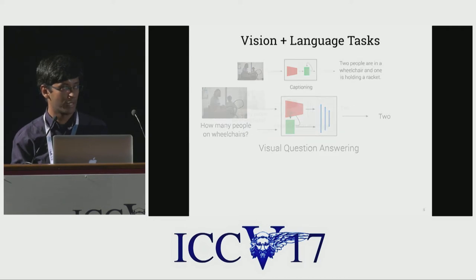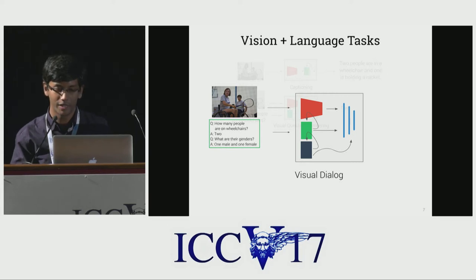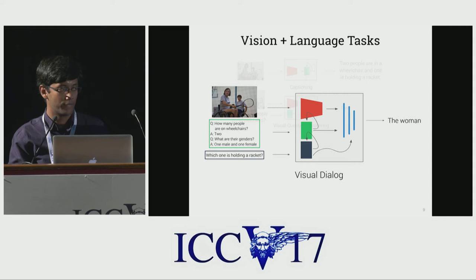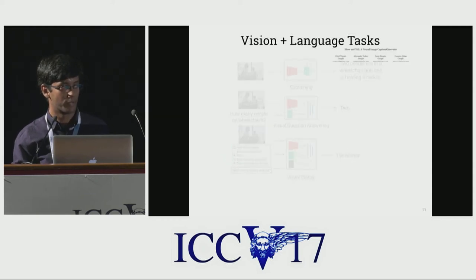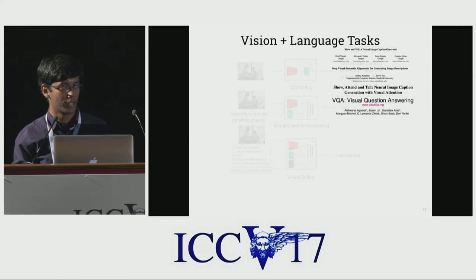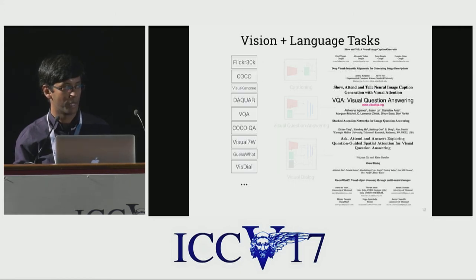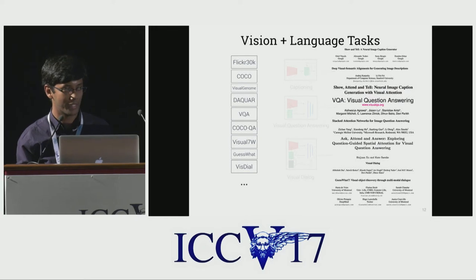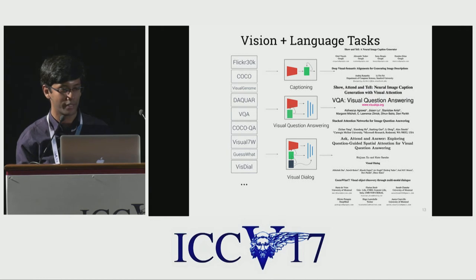Or more recently, visual dialogue, where given an image, a dialogue history consisting of a sequence of question-answer pairs, and a follow-up question, the goal is to predict a free-form natural language answer. There has been a bunch of nice work in this space showing impressive results, made possible by the availability of large-scale datasets and powerful neural models trained on them.